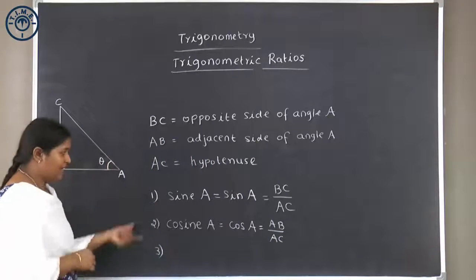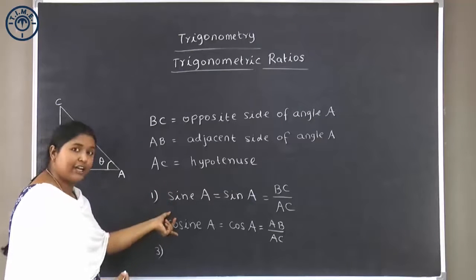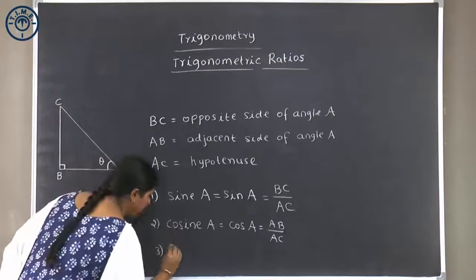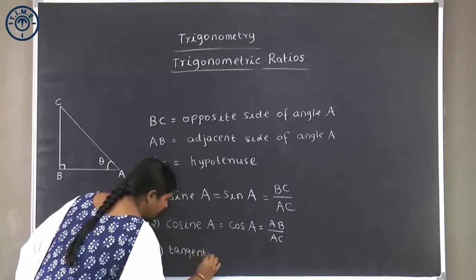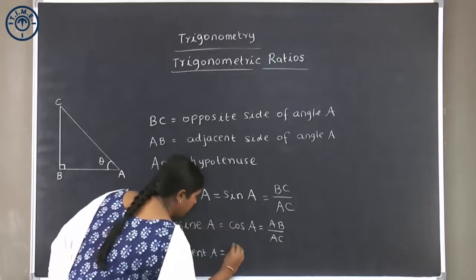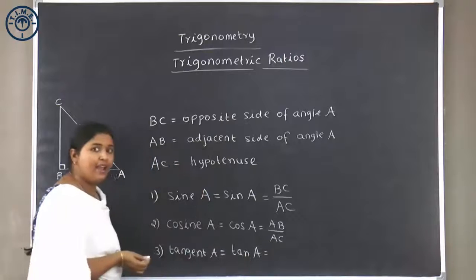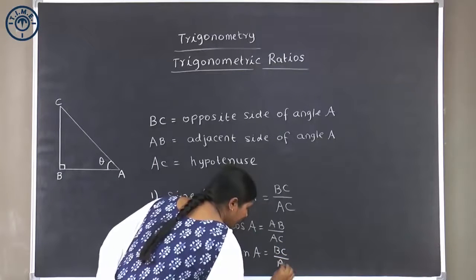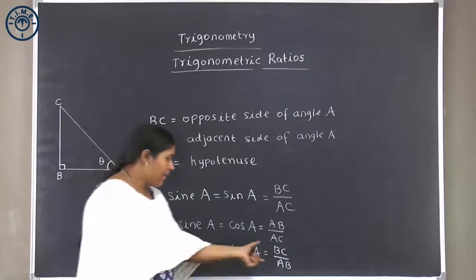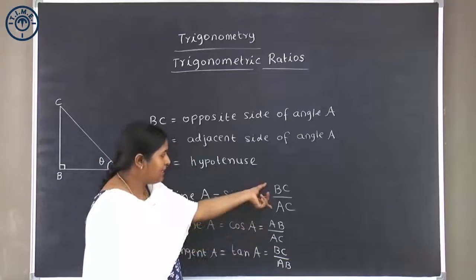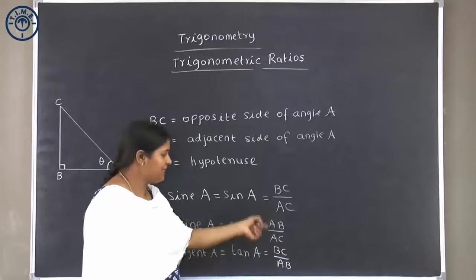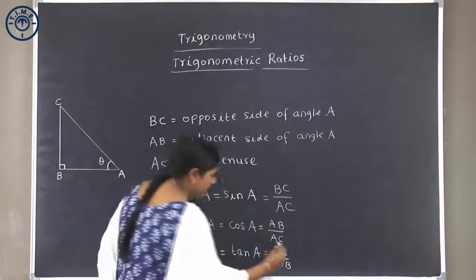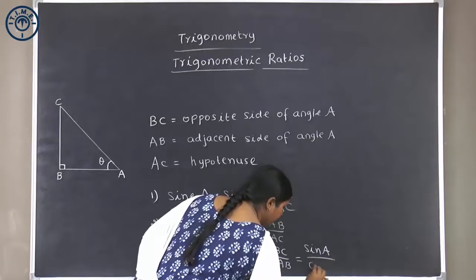Here we connected the opposite side and hypotenuse for sine, and the adjacent side and hypotenuse for cosine. Next, if we connect the opposite and adjacent side, we get tangent of angle A, or simply tan A. Tan A is the opposite side divided by the adjacent side, which is BC by AB. Notice that tan A is also equal to sin A divided by cos A.